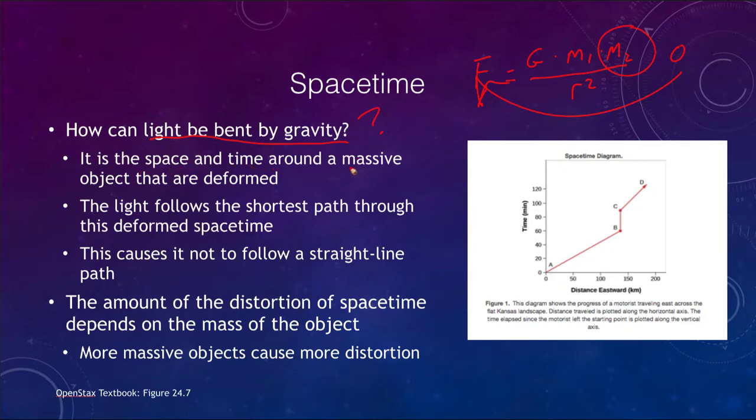is that the space and time around a massive object are deformed. So not nice and straight and flat. And the light will follow the shortest path available through that deformed spacetime. Because of this, light does not travel a straight line path as it otherwise would. In terms of the mass of an object, the amount of distortion depends on how massive the object is.